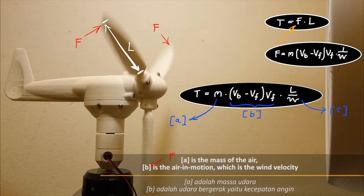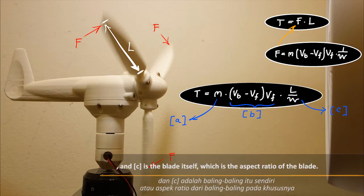A is the mass of the air, B is the air in motion, which is the wind velocity, and C is the blade itself, which is the aspect ratio of the blade.